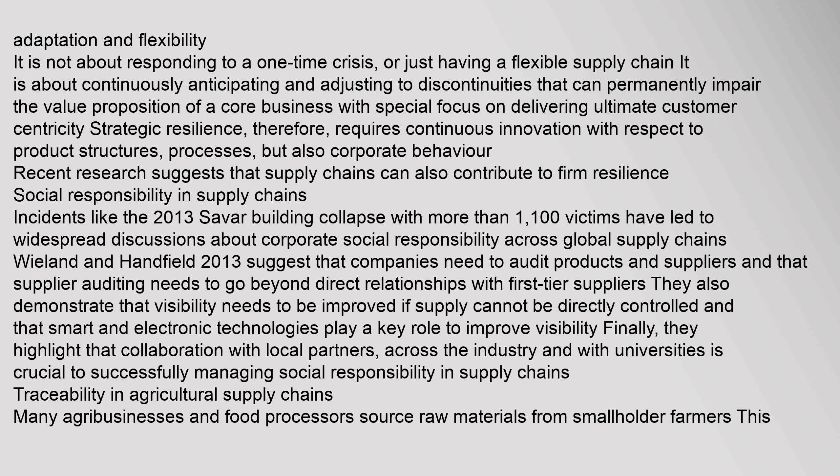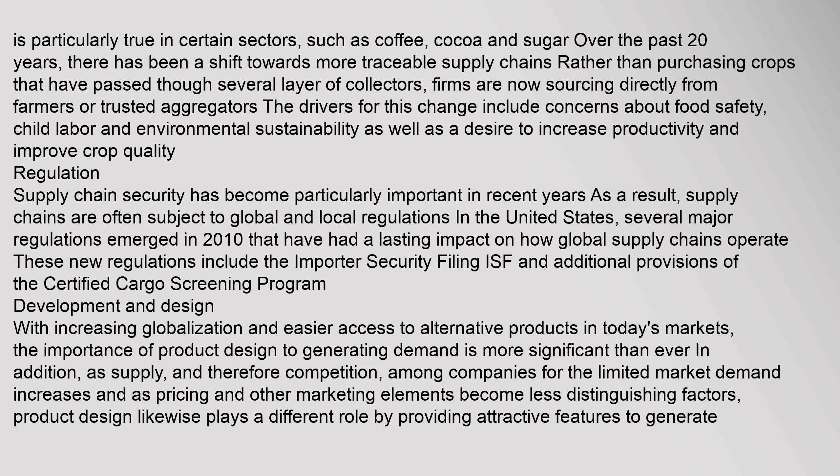Many agribusinesses and food processors source raw materials from smallholder farmers, particularly in sectors such as coffee, cocoa, and sugar. Over the past 20 years, there has been a shift towards more traceable supply chains. Rather than purchasing crops that have passed through several layers of collectors, firms are now sourcing directly from farmers or trusted aggregators. The drivers for this change include concerns about food safety, child labor, and environmental sustainability, as well as a desire to increase productivity and improve crop quality.